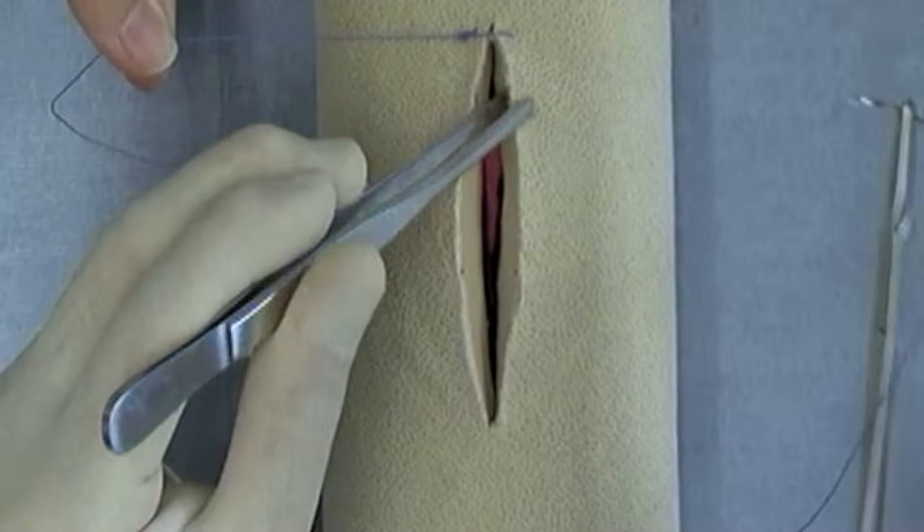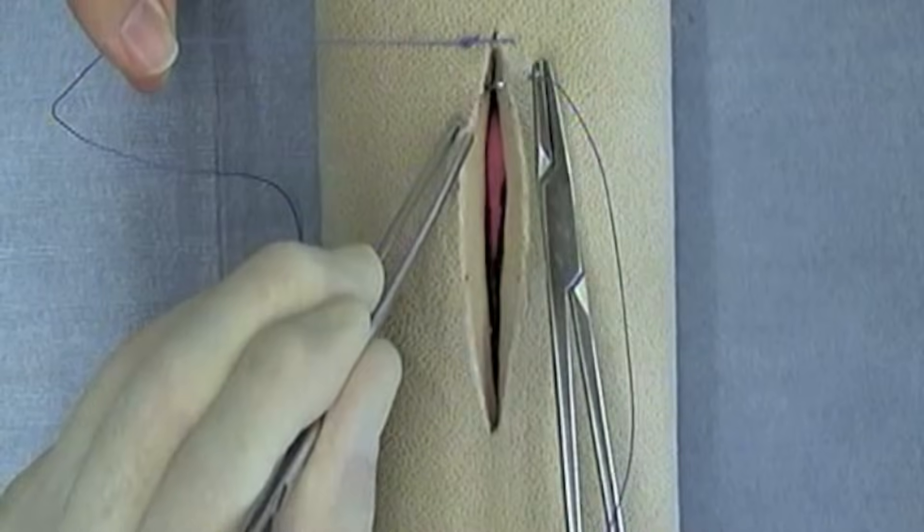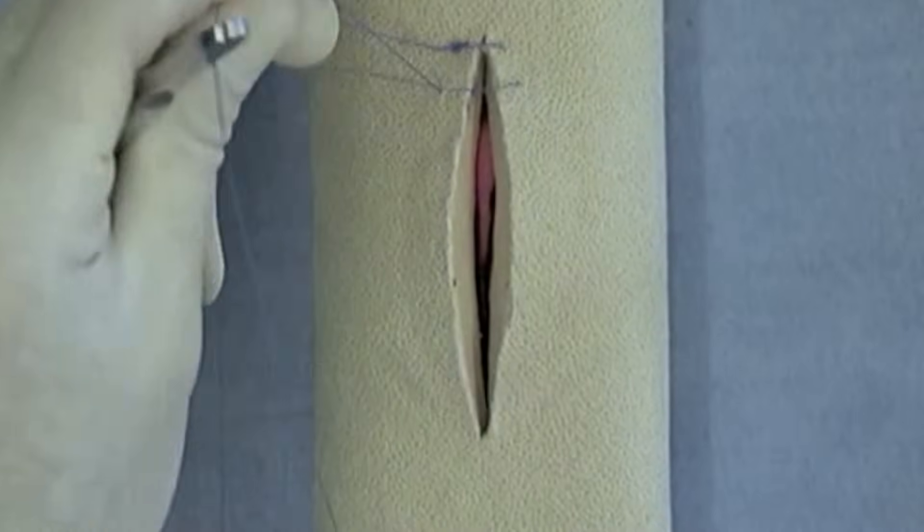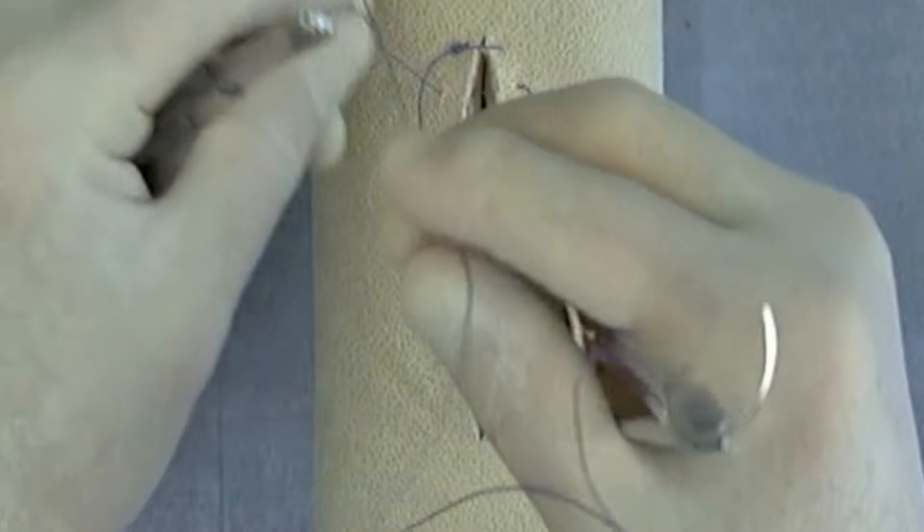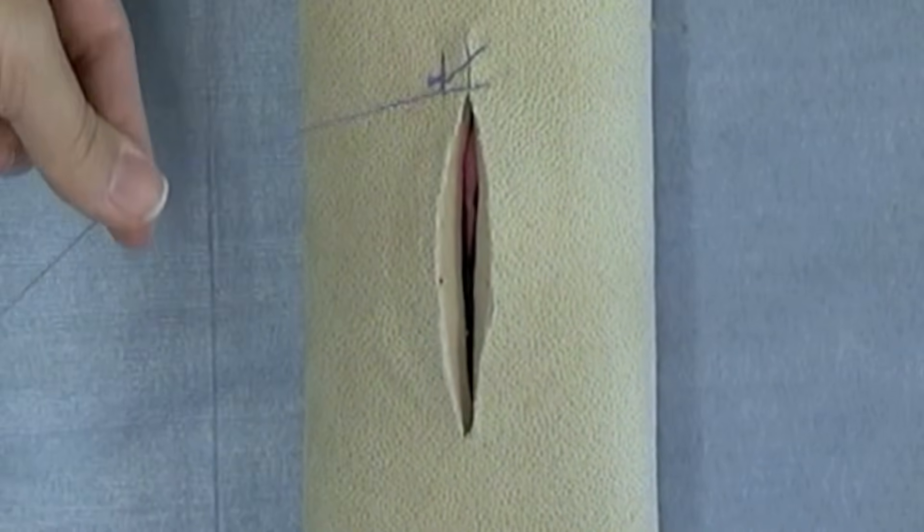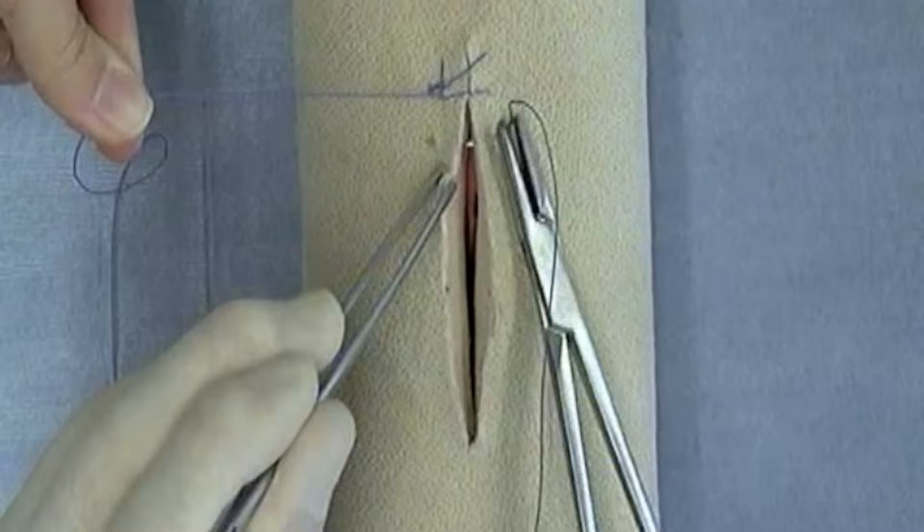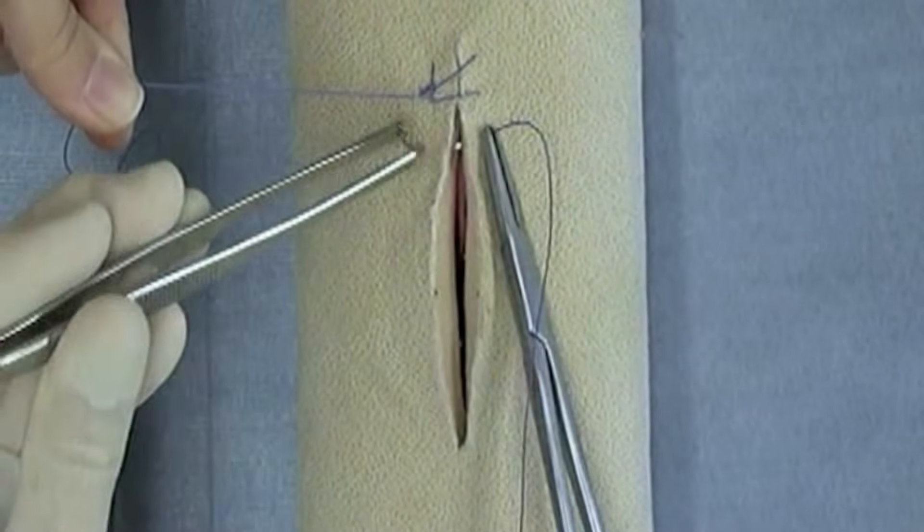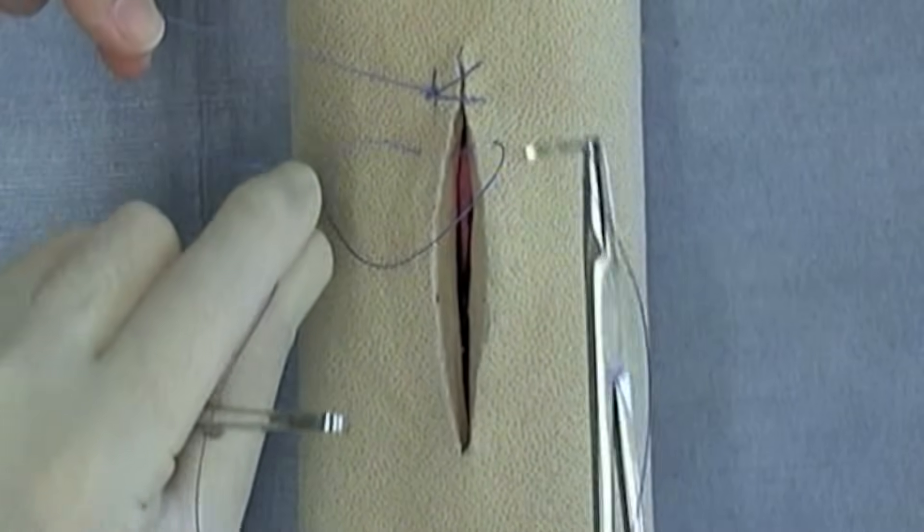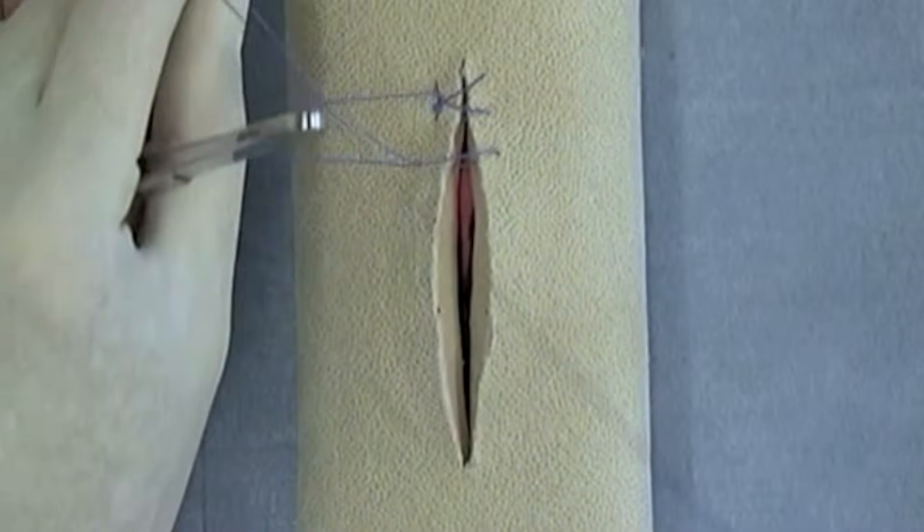And so now the pattern is done by continuously performing simple interrupted bites. But you can see I'm coming inside the loop of my suture, so as that's pulled down you can see now that there's going to be very even distribution of tension on the suture line. Once again notice that each bite comes inside the loop of suture being held by my surgical assistant.